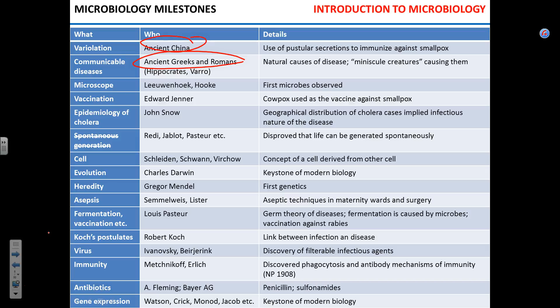The Chinese noticed that people who had suffered from smallpox — which causes pustules on the skin filled with fluid — could protect others. They poked those pustules, collected fluid, and scraped it into the skin of healthy people. Smallpox mortality was 30%. Mortality after this procedure, called variolation, was 1%. If you didn't die, you were safe — you wouldn't die from smallpox ever again.